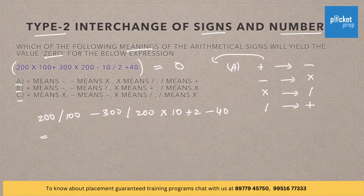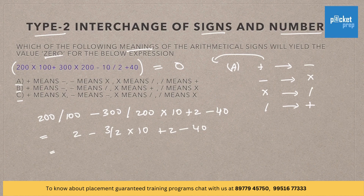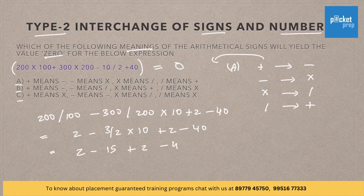If you solve this according to BODMAS rule, we will be getting the following steps: 2 minus 3 by 2 into 10 plus 2 minus 40, then 2 minus 15 plus 2 minus 40. So this will not give us 0. So option A is wrong.